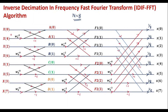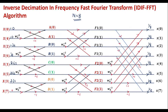Now we assign the corresponding input values to the signal flow graph. In bit-reversal order: X(0)=0, X(4)=0, X(2)=-j4, X(6)=+j4, X(1)=2+j2, X(5)=2+j2, X(3)=2-j2, and X(7)=2-j2. Now let's calculate the output of the first stage.